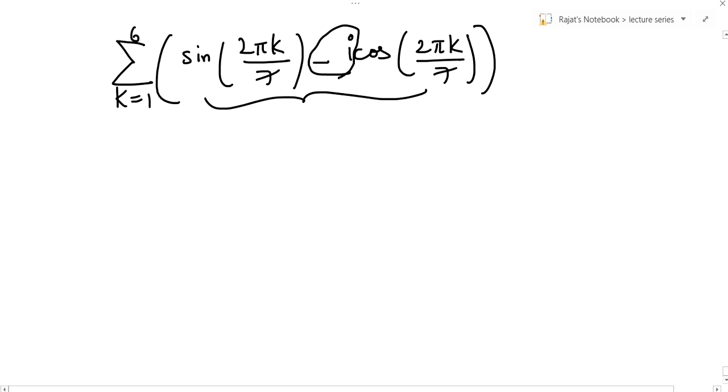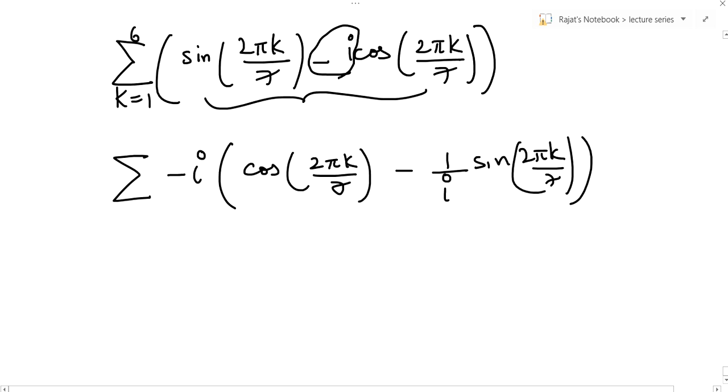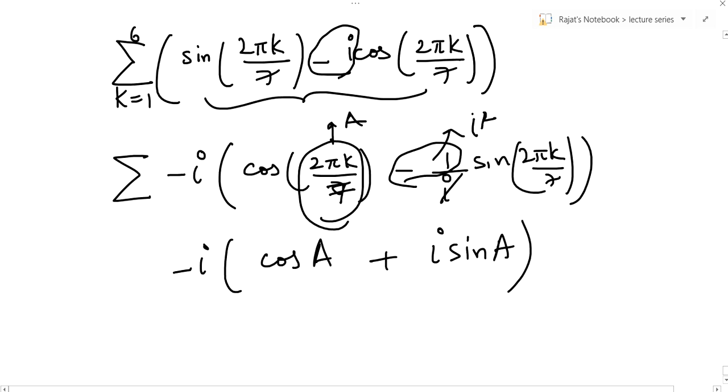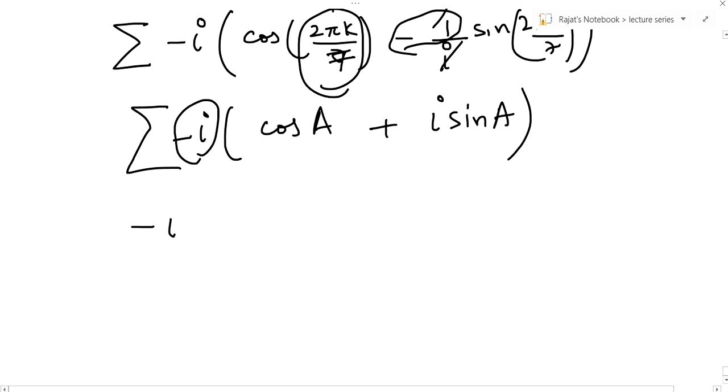If I take minus i common outside, this will become cos 2 pi k upon 7 plus i sine of 2 pi k upon 7. This minus 1 can be written as i square, so this becomes minus i summation of cos a plus i sine a.